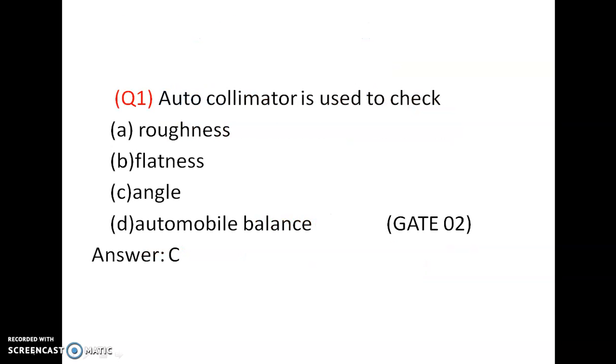Question number 1. Autocollimator is used to check roughness, flatness, angle, or automobile balance? It is used to check the angle.